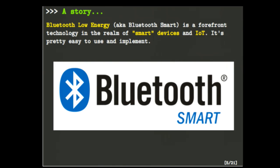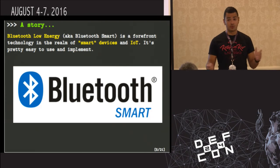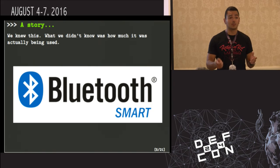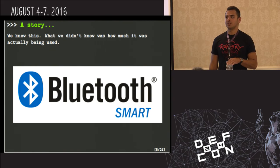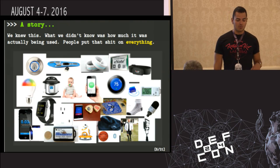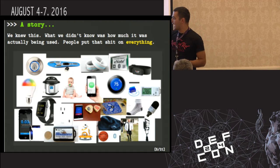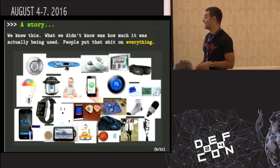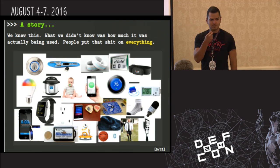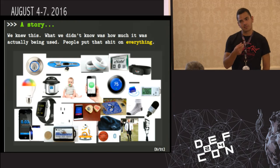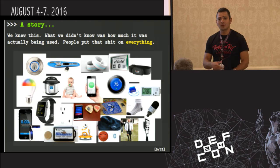Bluetooth Low Energy is a forefront technology in smart devices and IoT because it's super easy to use and super low-energy. People use this on everything — smart watches, outlets, pressure cookers. You can even buy a pacifier that reports a baby's temperature using Bluetooth Low Energy. There's all sorts of stuff out there you can buy.